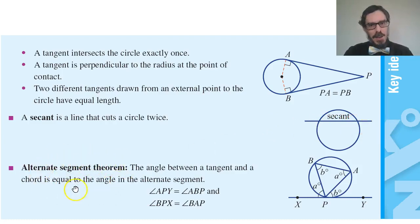The alternate segment theorem says that the angle between a tangent and a chord is equal to the angle in the alternate segment. That's a bit tricky to try to work out. Let me show you. The angle between the tangent and the chord is equal to the angle in the alternate segment.